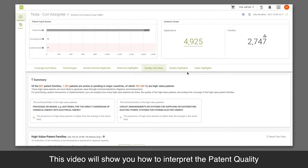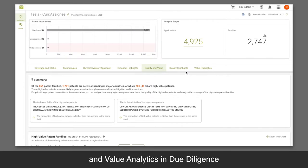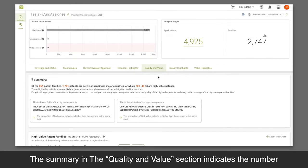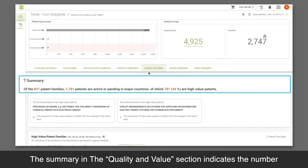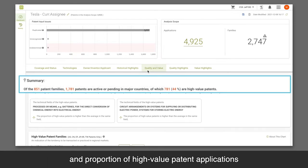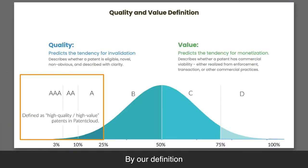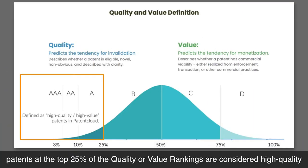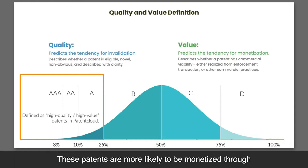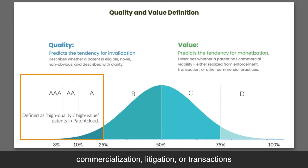This video will show you how to interpret the patent quality and value analytics in due diligence. The summary in the quality and value section indicates the number and proportion of high value patent applications. By our definition, patents at the top 25% of the quality or value rankings are considered high quality or high value patents. These patents are more likely to be monetized through commercialization, litigation, or transactions.